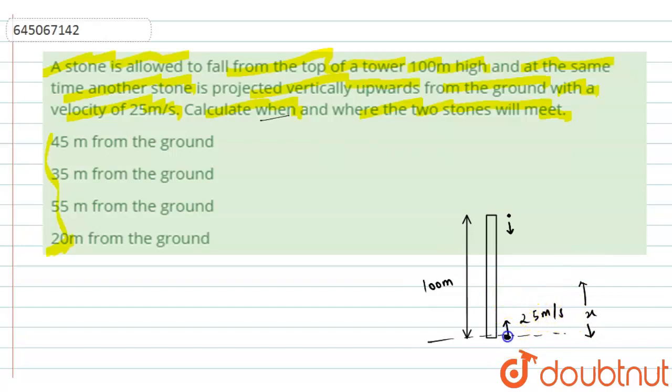That means the stone that is performing the upward motion has covered x displacement, and the stone coming downward has covered 100 minus x meters of displacement, and let's say they are meeting after t time.